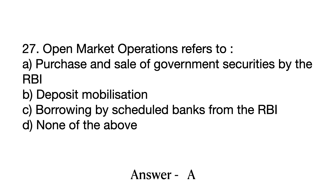Question number 27 is a very basic question from economics. Basics of economics are very important — in every such question paper, at least 10 questions are always from basic economics concepts. In this case, OMO, which stands for Open Market Operations, is basically the buying and selling of government securities by the RBI for various reasons. If you have read the basics of economics, you will know this answer.